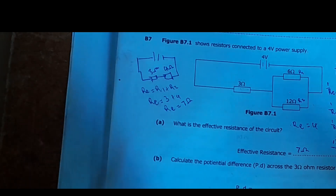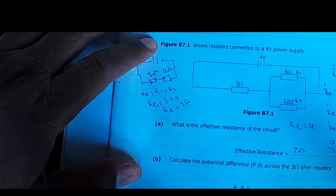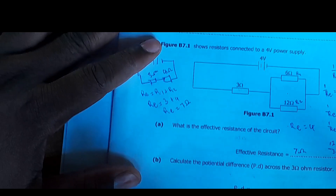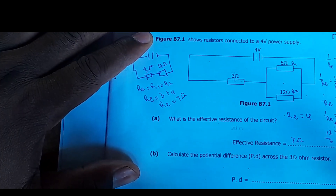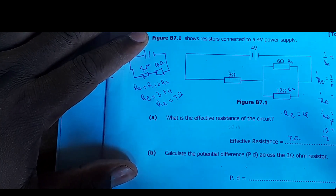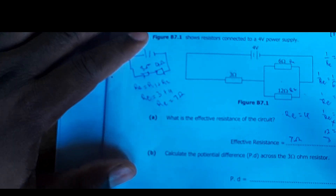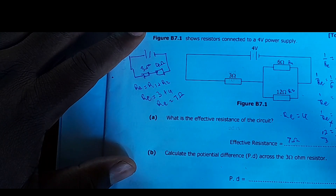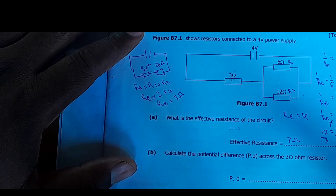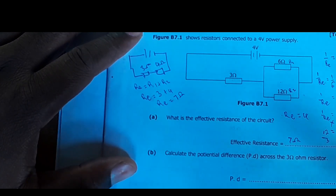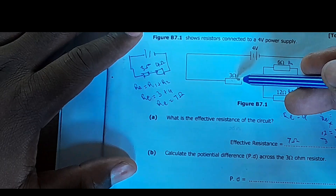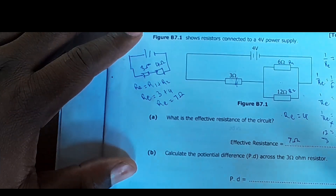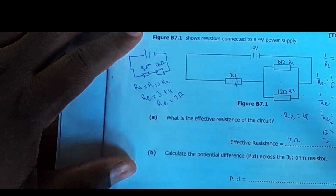We are done with the first question and can move on to the second question. The second question says: calculate the potential difference across the 3-ohm resistor.